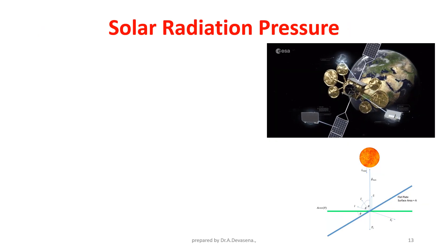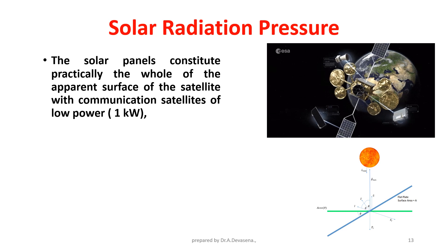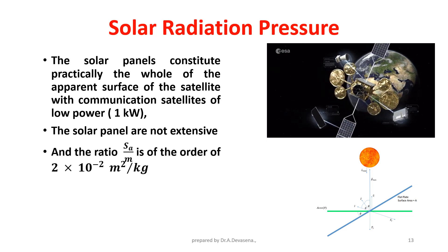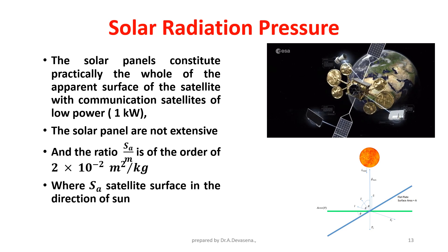The solar panels constitute practically the whole of the apparent surface of the satellite with communication satellites of low power. The solar panels are not extensive and the ratio S_A divided by m is of the order of 2 × 10⁻² meter squared per kg, where S_A is the satellite surface in the direction of the sun and m is the mass of the satellite.